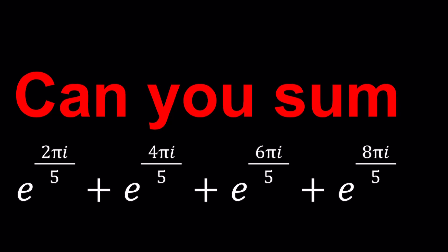So we have this sum of imaginary powers of e: e to the power 2πi over 5, 4πi over 5, so on and so forth. And we're going to evaluate the sum, find a numerical answer.